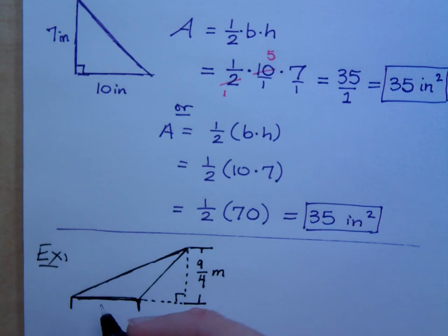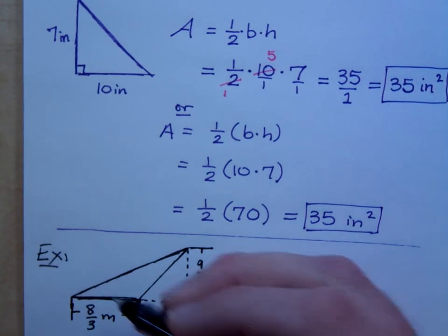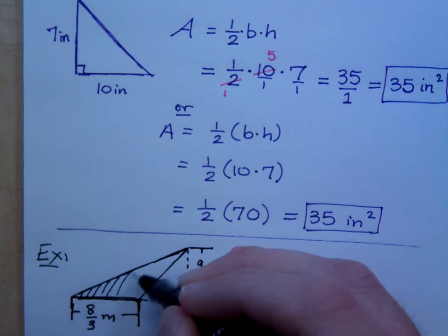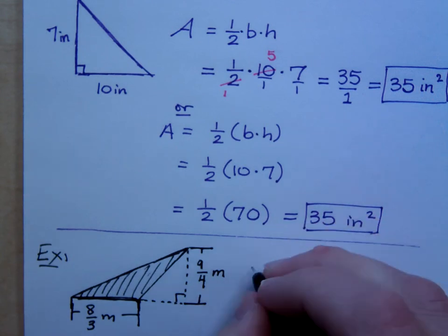And suppose the base is equal to 8 thirds meters. What is the area for this triangle? Can you figure that out? What's the formula for the area?